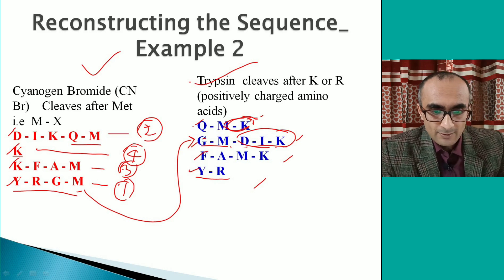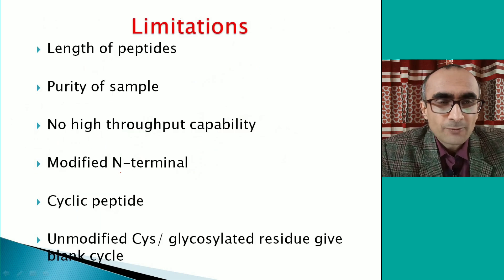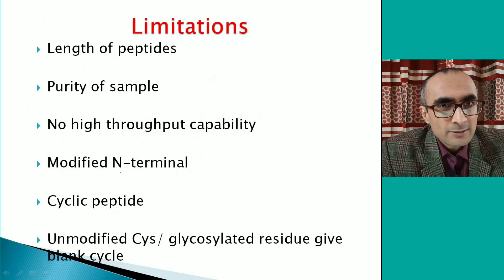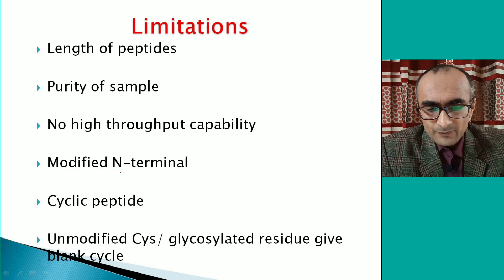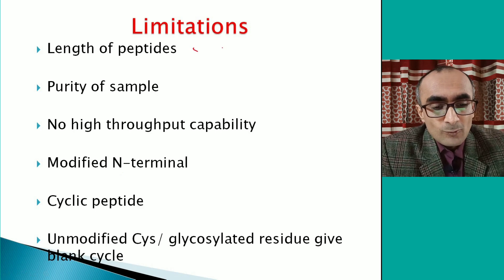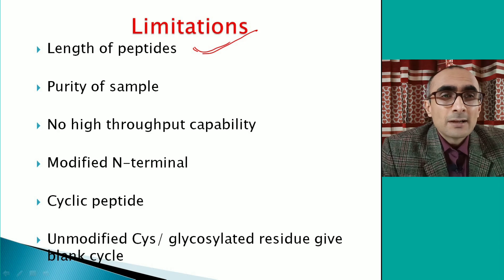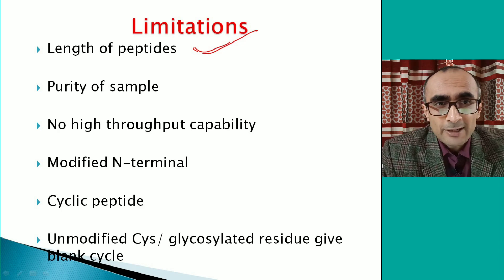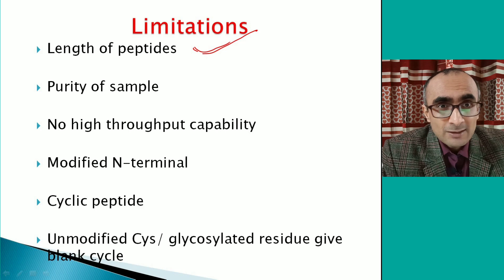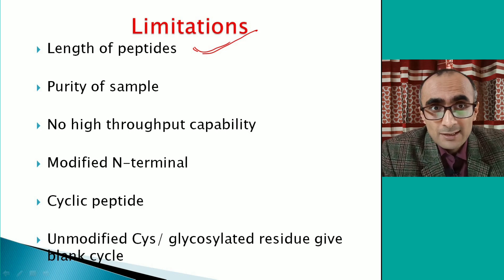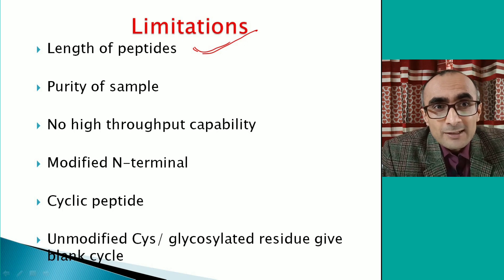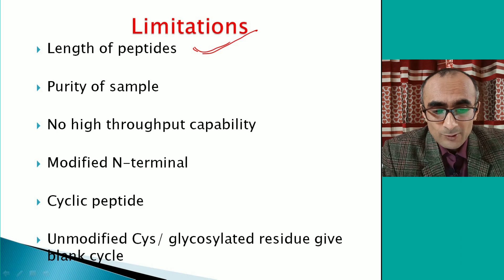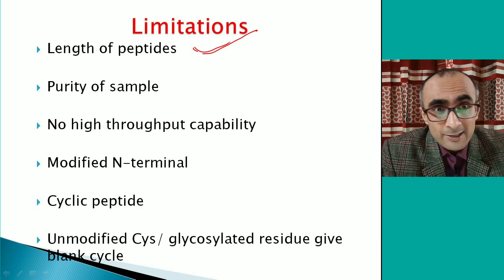The Edman degradation method is a very popular method for sequencing proteins and peptides, but it has some limitations. For example, if the peptide is very long — beyond about 20 to 30 amino acids — it can be sequenced with good efficiency and accuracy, but for larger sequences the reliability decreases. You need smaller peptides to obtain an accurate sequence.